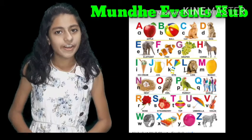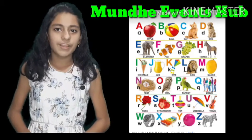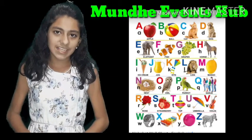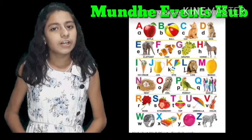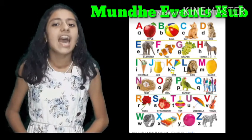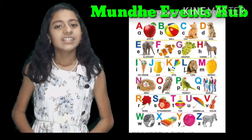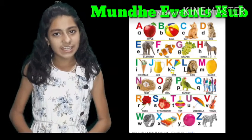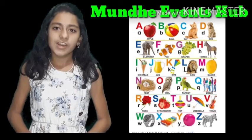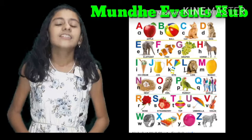O for orange, P for pencil, Q for queen, R for rose, S for sun, T for tiger, U for umbrella.